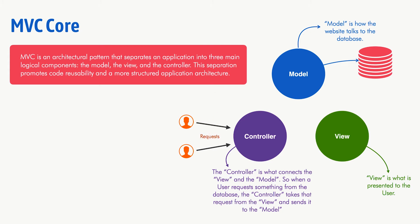The Controller receives requests, and based on the Controller, the user is going to see a View. The View can talk to the Model, but there is an important point: the Model and the View should not talk to each other directly — that would break the role of MVC, which is separation of concerns. It can be done, but it's not the right thing to do.